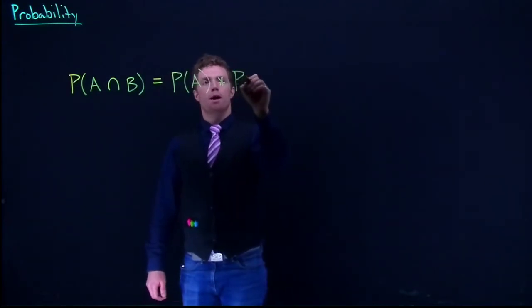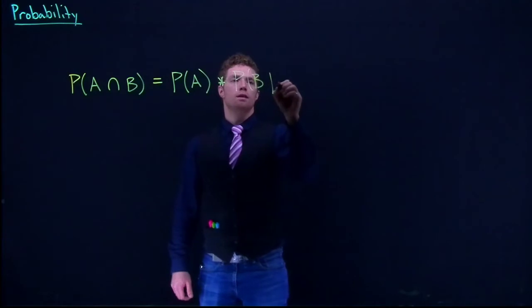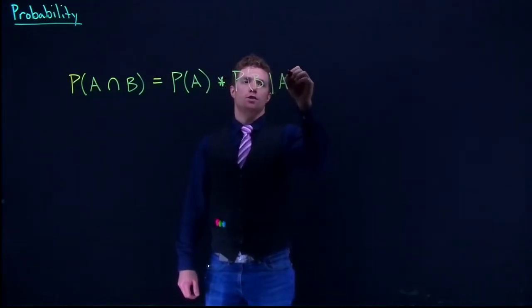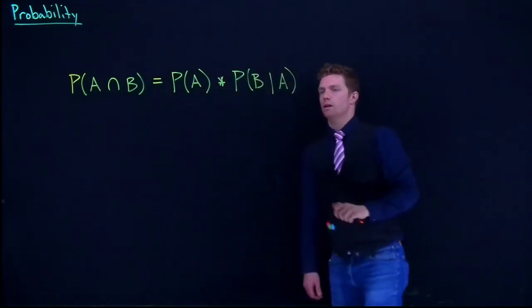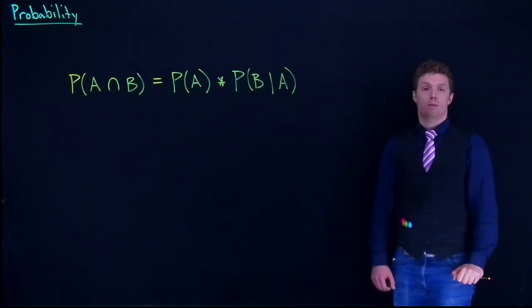by the probability of B given that A has occurred. That's the most generic form of multiplication rules.